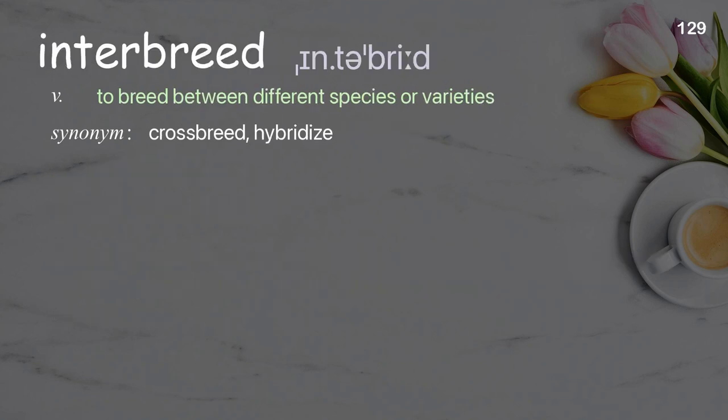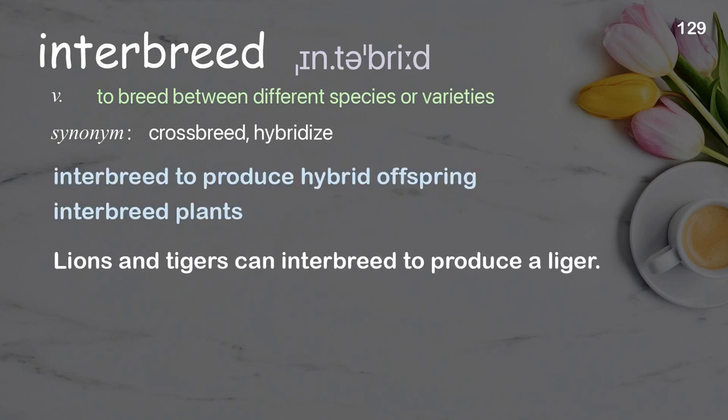Interbreed: To breed between different species or varieties. Examples: Interbreed to produce hybrid offspring. Interbreed plants. Lions and tigers can interbreed to produce a liger.